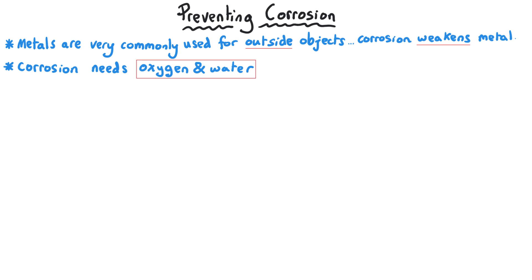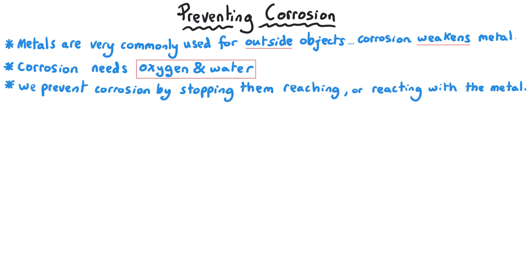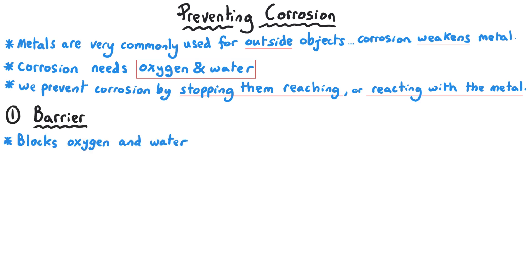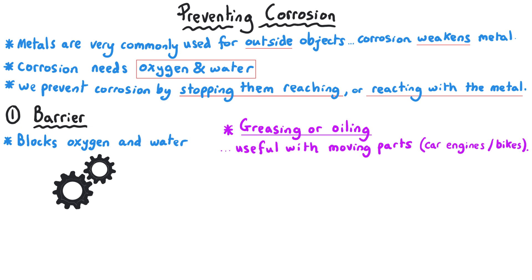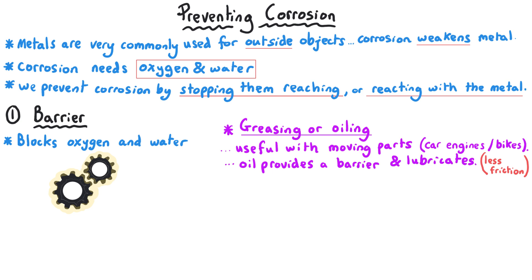Corrosion requires both oxygen and water, so preventing corrosion usually means preventing either one or both from coming into contact with the metal, or preventing them from reacting with the metal once in contact. The most common method is to use some kind of barrier. For moving parts, you might oil or grease them — this provides the low friction needed for smooth movement whilst also forming a barrier that stops oxygen and water making contact, for example in car engines and bicycle chains.